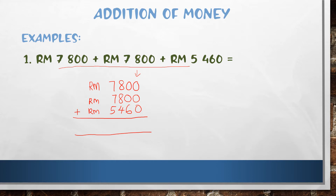Zero plus six is six, sixteen plus four is twenty — write zero carry two, nine plus seven is sixteen — write six carry one, sixteen plus five is twenty-one. So the answer is RM 21,060. How to pronounce this number: twenty-one thousand and sixty ringgit.